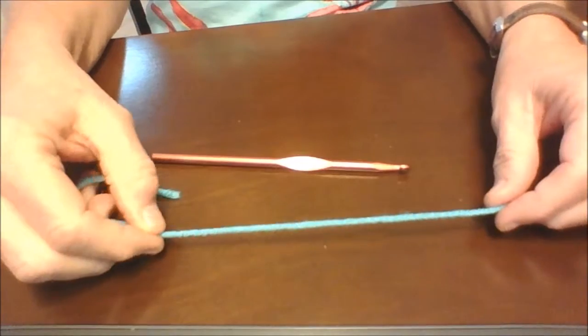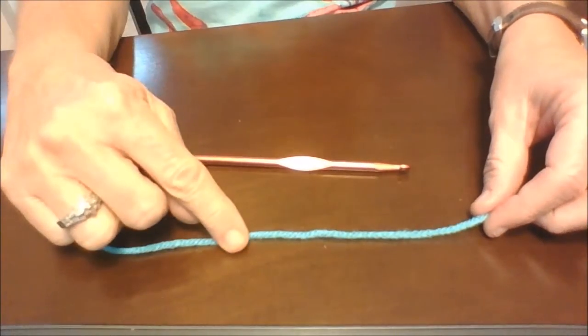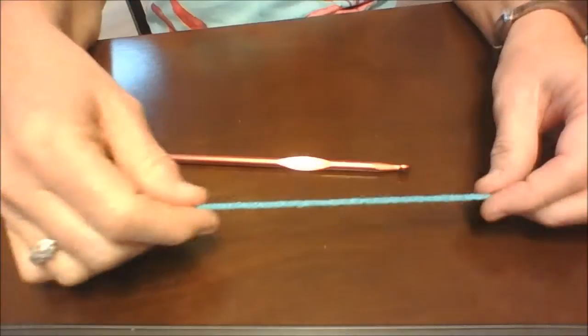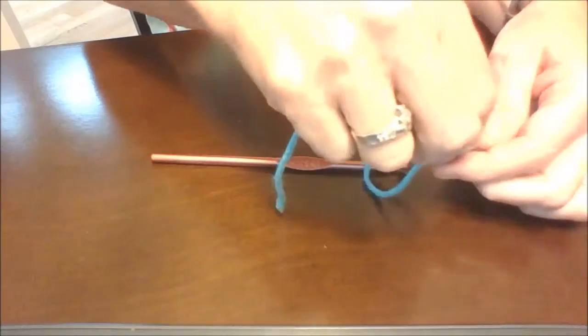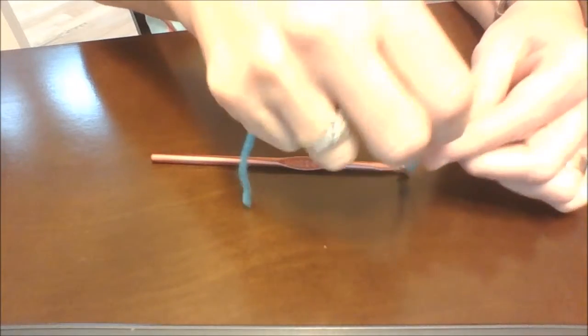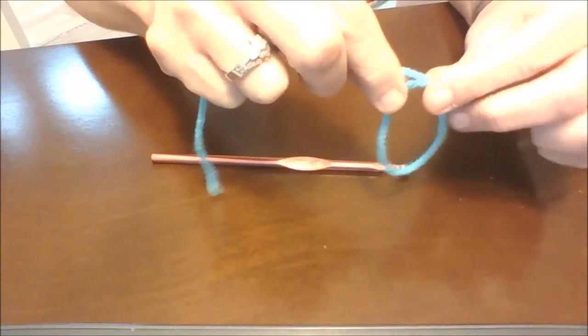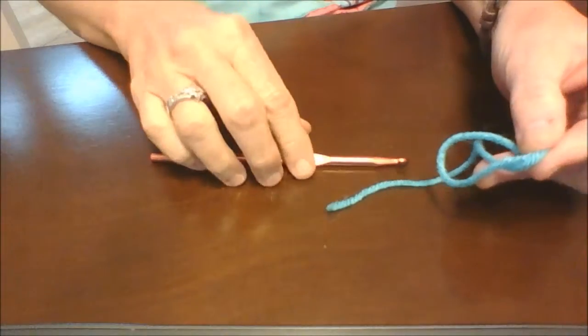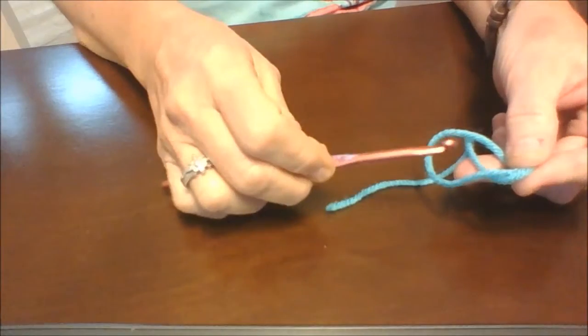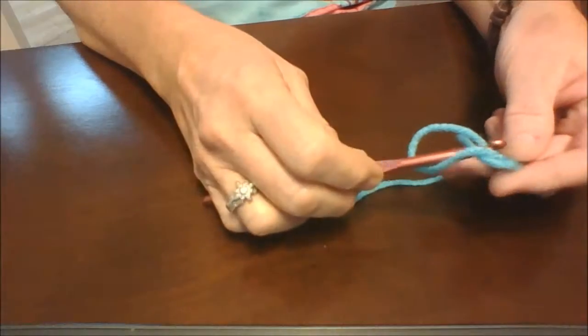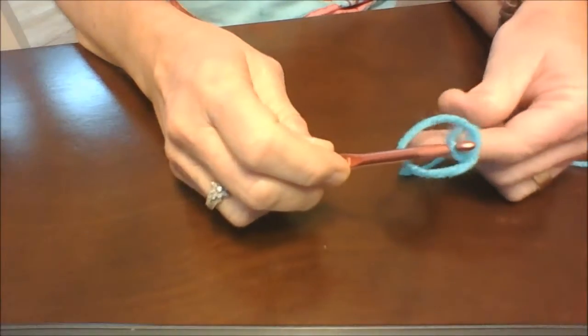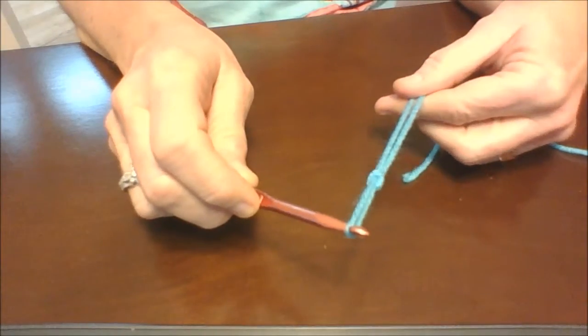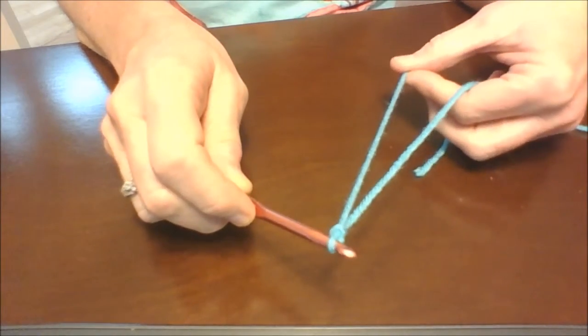And you are going to make what's called a slipknot. So you kind of cross it over so you have a loop like this, and you let that end fall. And then you're going to take your hook and grab it in there. And then you're going to pull, and you're going to tighten it up onto your hook.